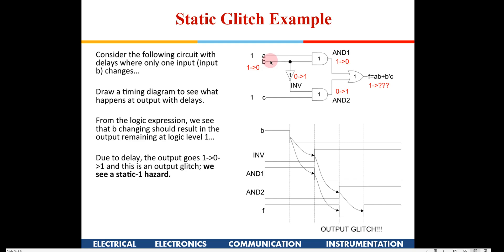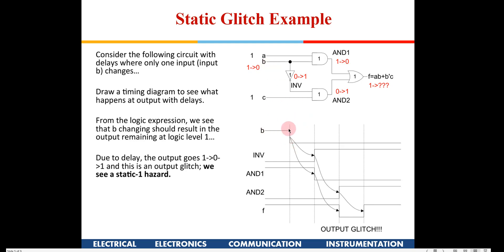When B goes to zero, the top AND gate output goes low. But because there is an inverter on the B input to the second AND gate, B' becomes one after a delay. So the bottom AND gate will eventually give a one. For both input combinations — A=1,B=1,C=1 and A=1,B=0,C=1 — the output should remain one.